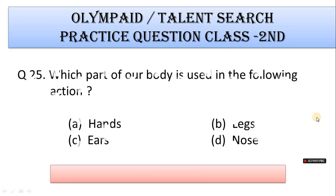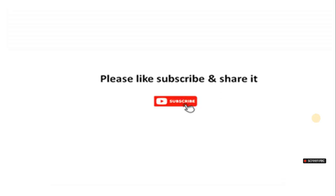Number 25: Which part of our body is used in the following action? A. Hands, B. Legs, C. Ears, D. Nose. Correct answer is Option B. Legs. That's all for now — please like, subscribe, and share. Thank you.